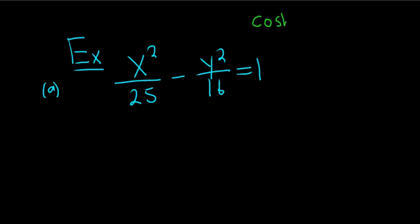So recall that the hyperbolic cosine squared of t minus the hyperbolic sine squared of t is equal to 1. So in this problem we want to use this identity to rewrite this equation.